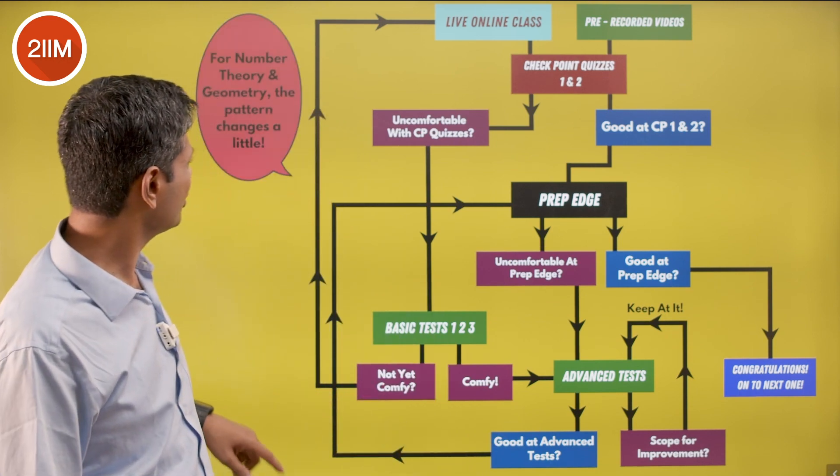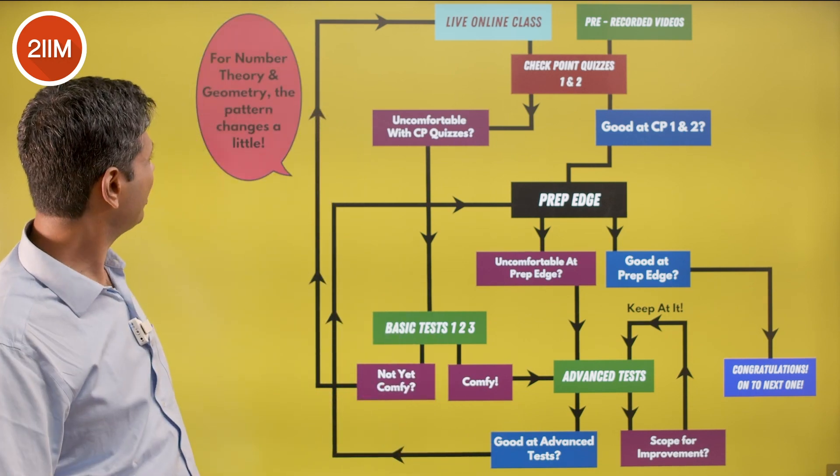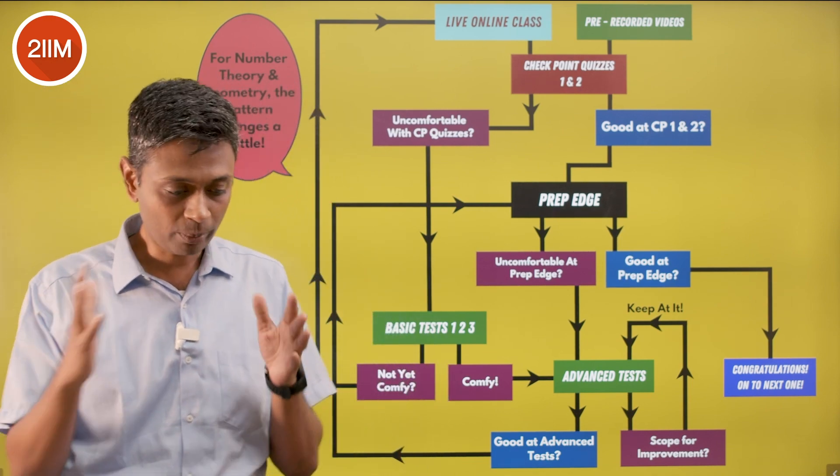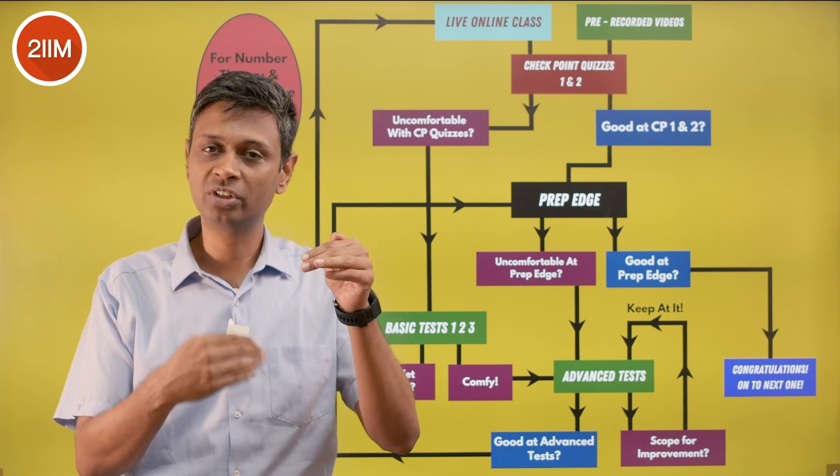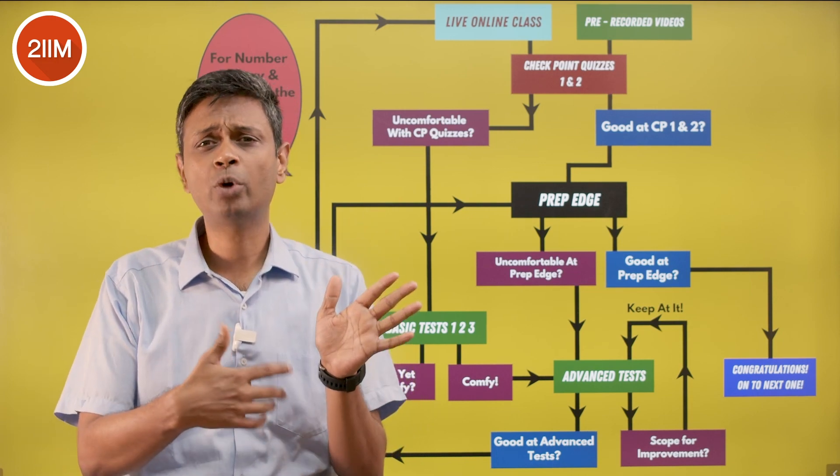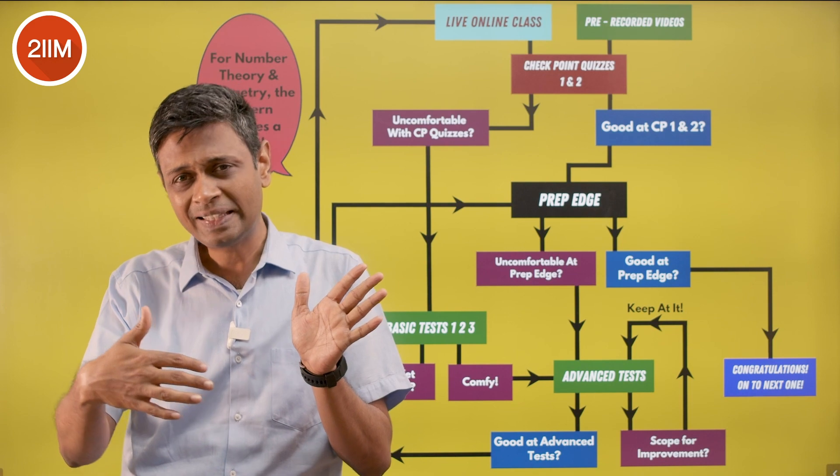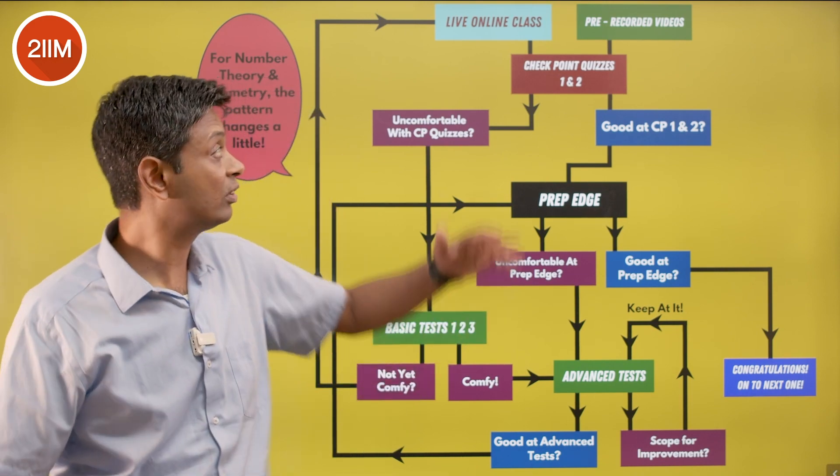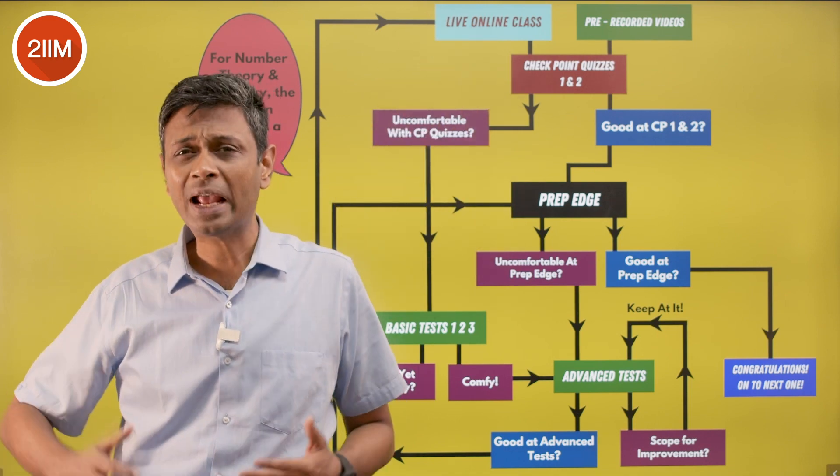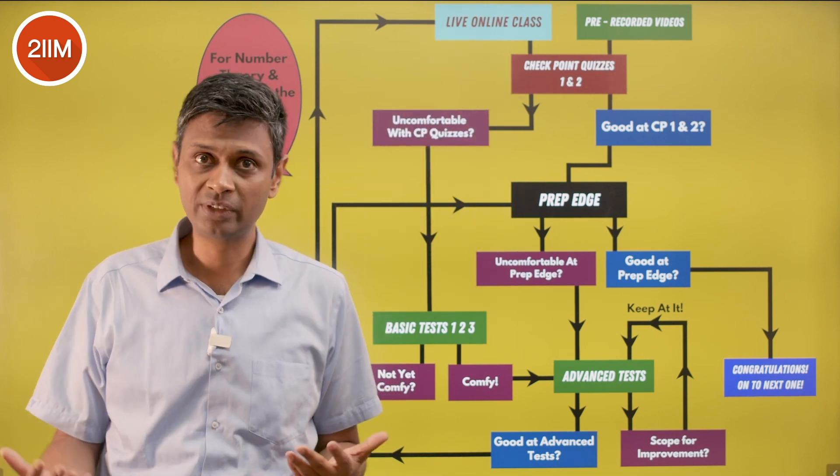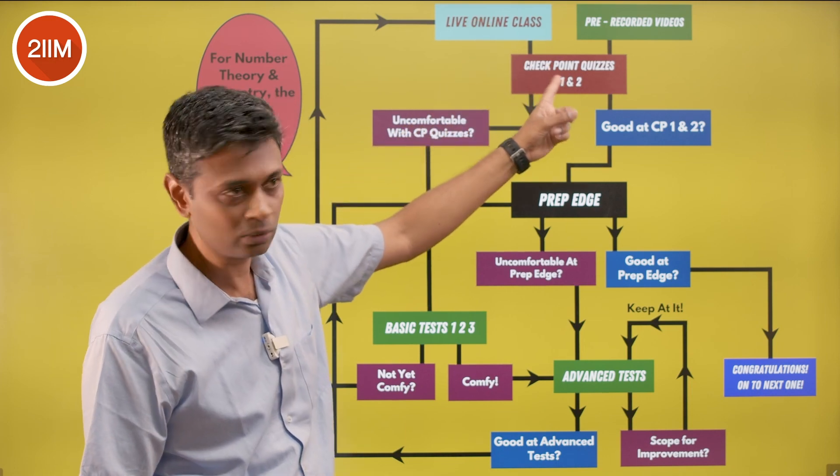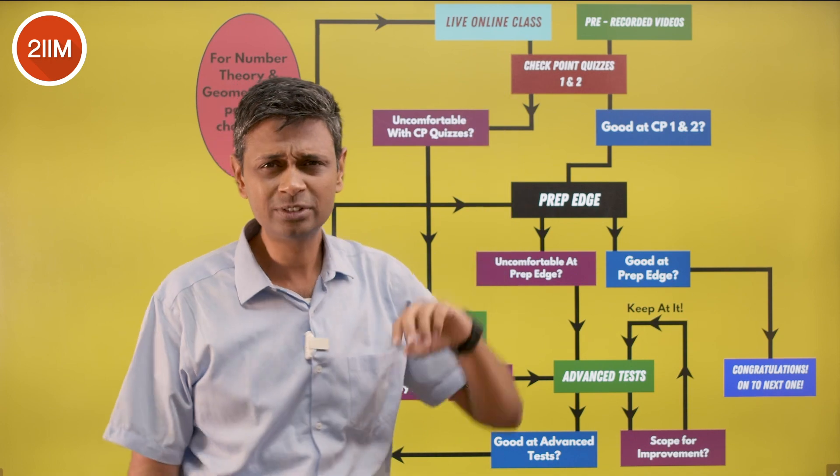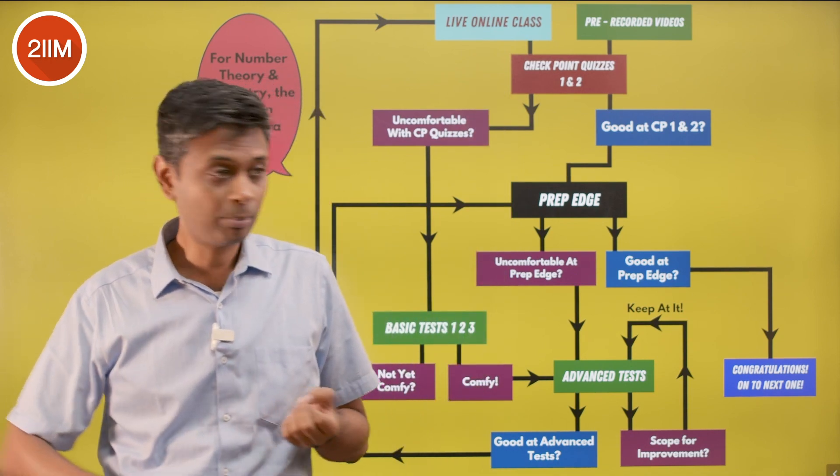Just one small thing: there are topics like number theory and geometry where the pattern changes a little bit, because these topics are vast. Geometry will have geometry triangles, geometry circles, geometry quadrilaterals, geometry mixed bag, and then an overall wrap of all of these. Triangles therefore sometimes at an overall level - this will work for geometry, but you can't just do practice questions at an overall level.